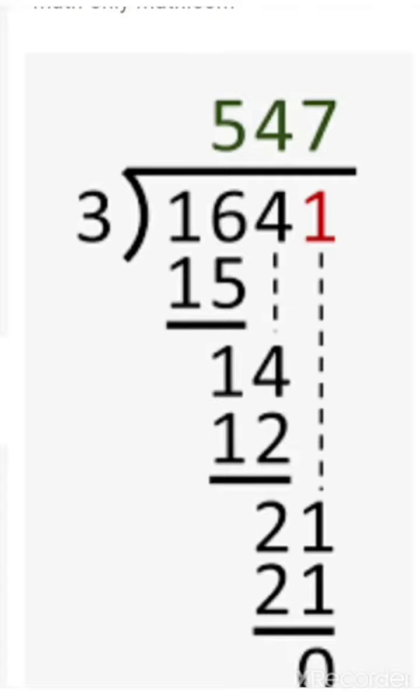Then 1 will be dropped down. And you will read the table of 3, and it should not be more than 21. So see, 3 times 7 is 21. Now you will subtract 21 from 21. You have got 0.